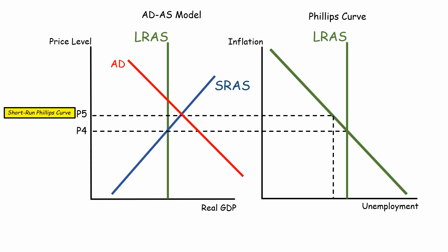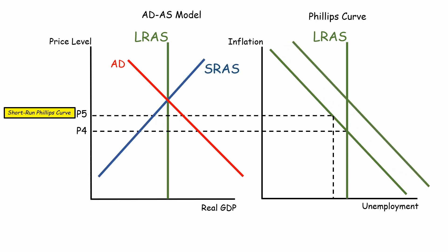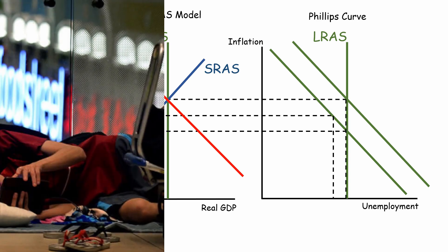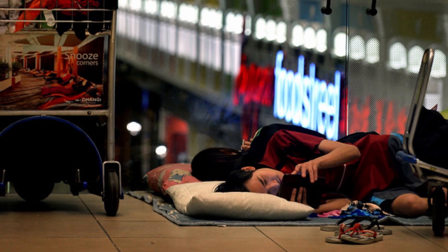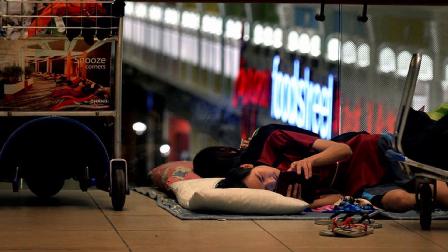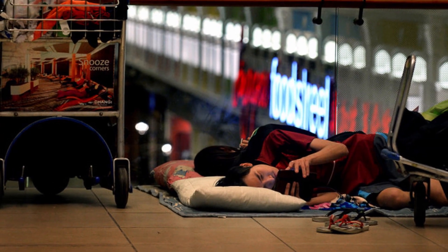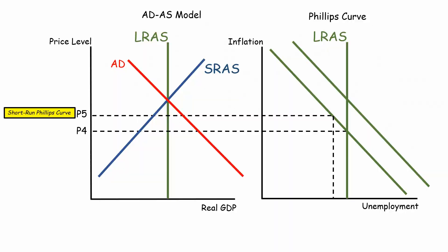Now, in the long run, since prices are high, workers will demand higher wages. Prices of supplies and raw materials also go up. This will increase price levels even more, while production decreases because of rising wages and costs. Of course, there will be no need for additional workers when production decreases. Some workers may even be retrenched.